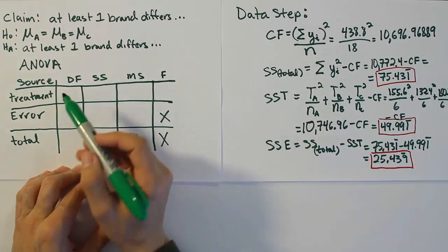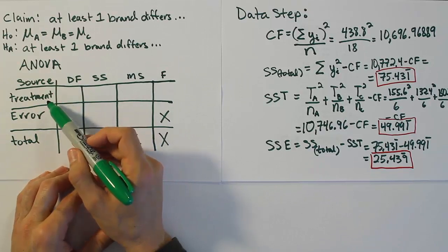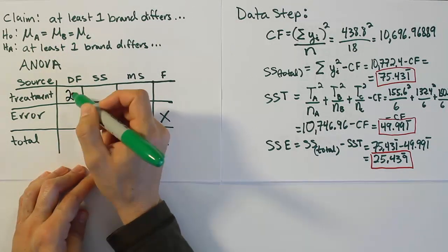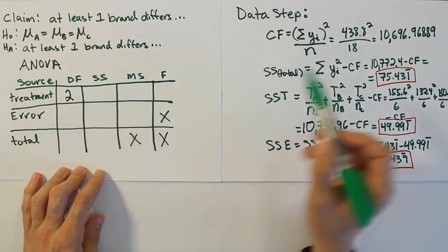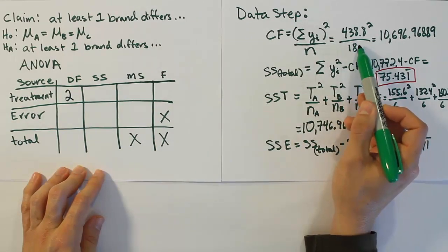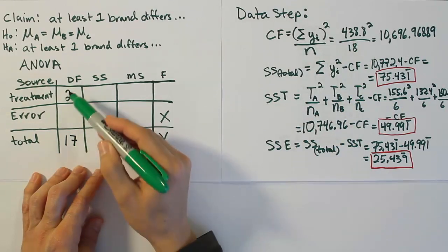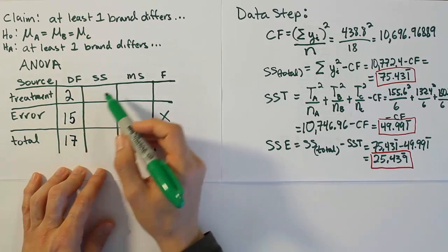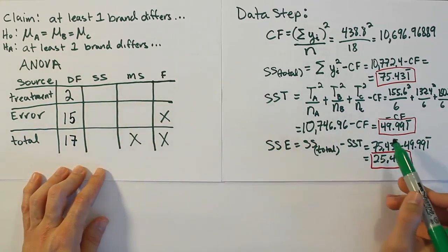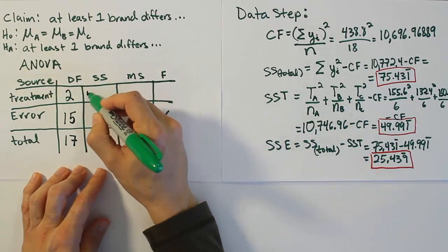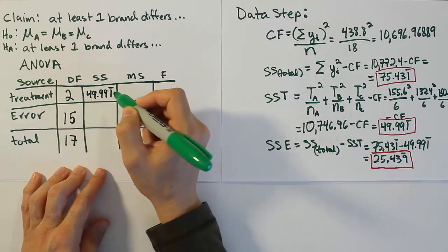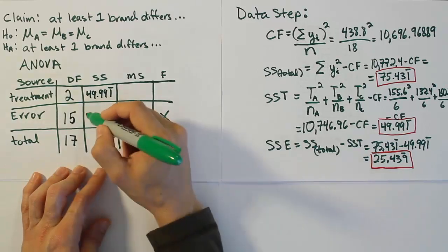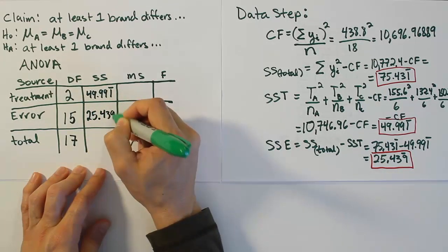Filling in the ANOVA table: for degrees of freedom for treatment, we had three treatments, so df = 3 − 1 = 2. For total, there were 18 data values, so df = 18 − 1 = 17. The difference gives df for error = 17 − 2 = 15. The sum of squares for treatment is 49.991 repeating, the sum of squares for error is 25.439 repeating, and the total sum of squares is 75.431 repeating.